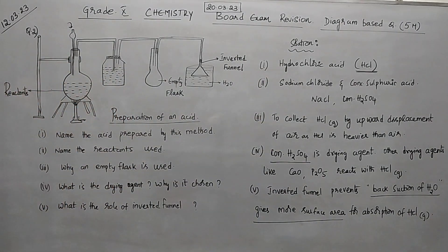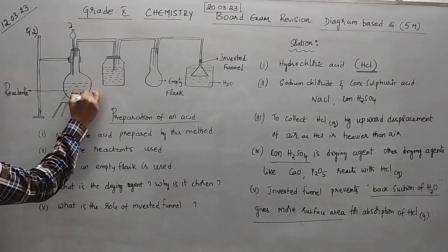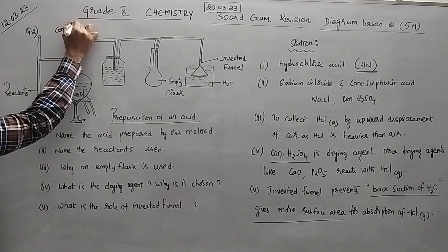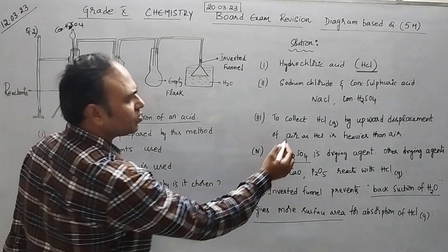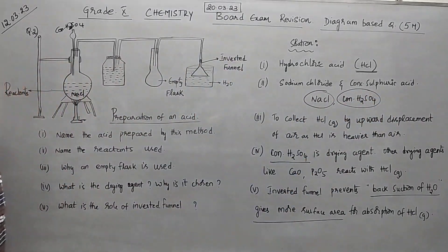Second question. Name the reagents used. What are the reagents used? Actually NaCl was present here. Concentrated H2SO4 is added through thistle funnel. So therefore what are the two reagents you have? Sodium chloride and concentrated H2SO4.